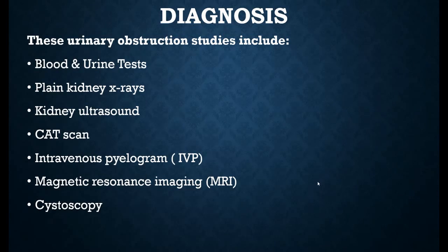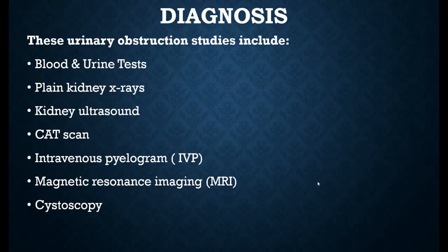Diagnosis of this condition is straightforward as it is a common condition. We can perform blood tests, routine urine tests, kidney X-rays, kidney ultrasound scan, CT scan, MRI, or intravenous pyelogram. If the obstruction is due to a prostate problem, cystoscopy can be performed.